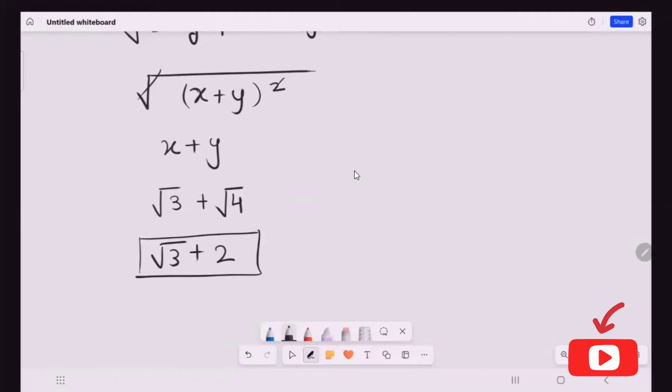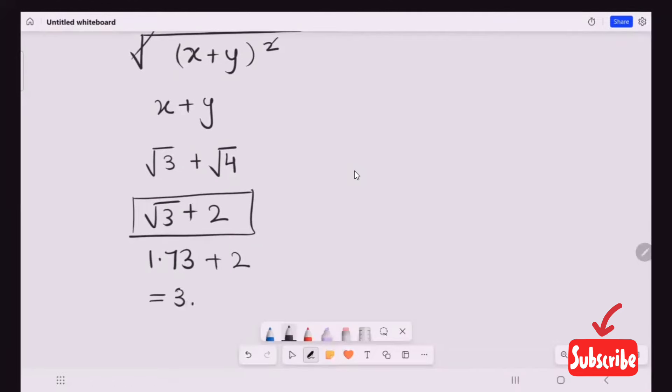But we can simplify it further. This radical 3 is equals to 1.73, and as I add up the 2, it is equal to 3.73.